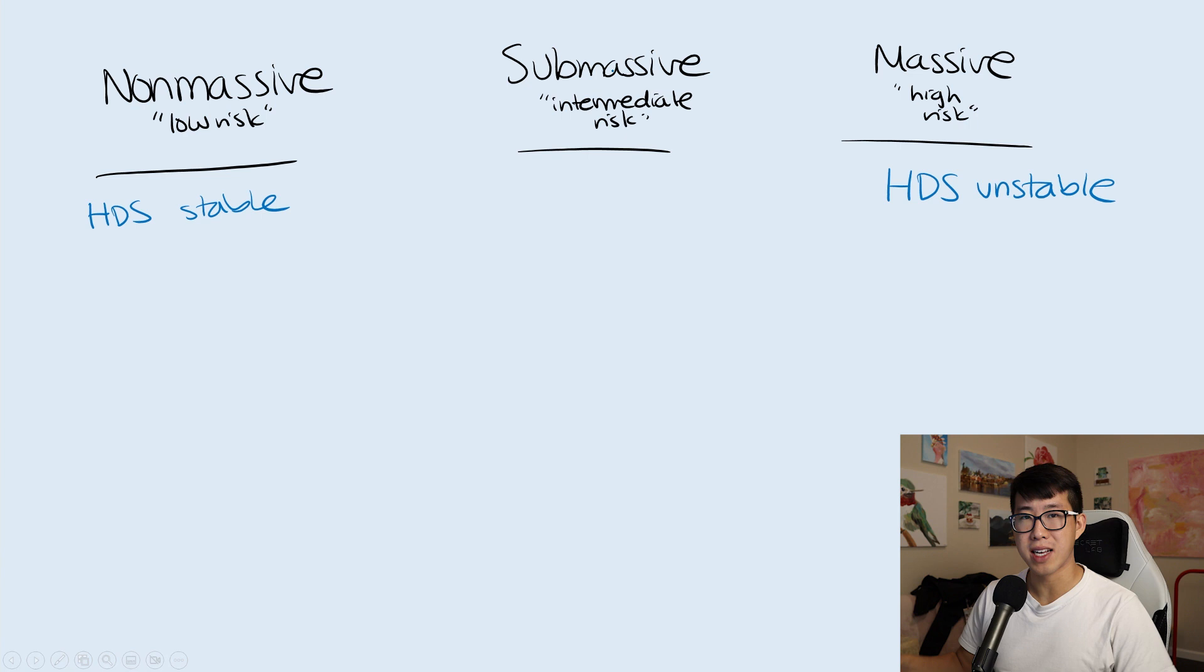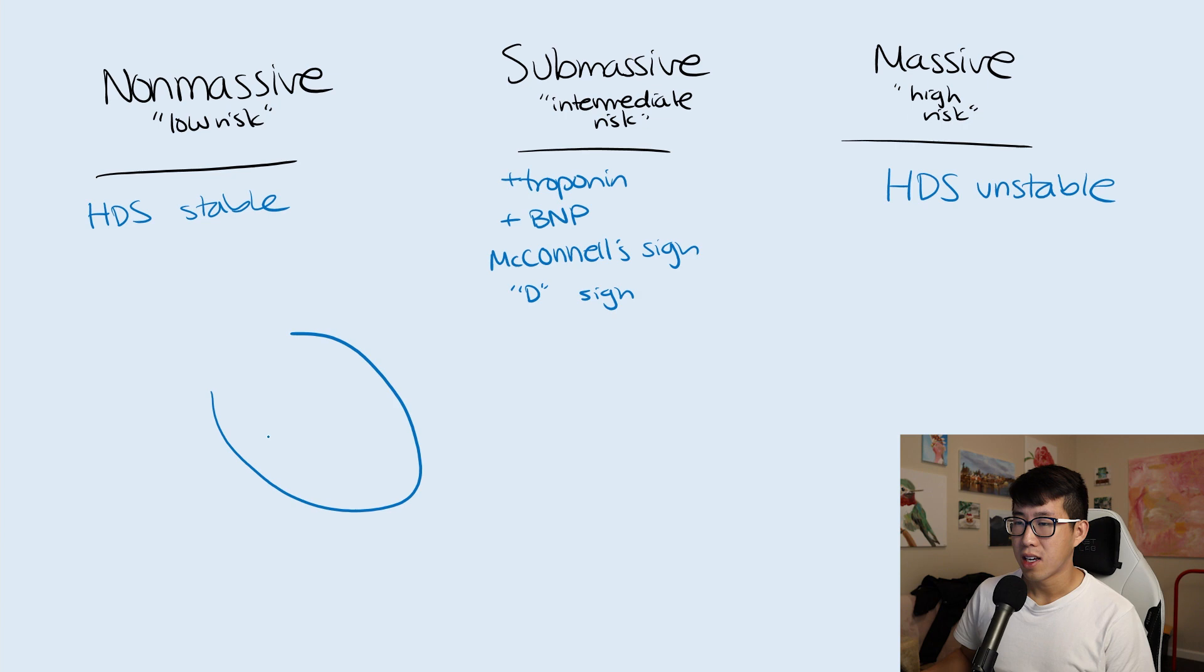What's in the group that's sub-massive or intermediate risk? There's a couple things you need to know. What differentiates sub-massive from the other two classes is that the patient is hemodynamically stable, but they have signs of right ventricular dysfunction or right ventricular overload. Think about certain things that may show up when evaluating the patient: positive troponin, positive BNP, or you can see echo signs of right ventricular pressure overload, for example the McConnell's sign or the D sign.